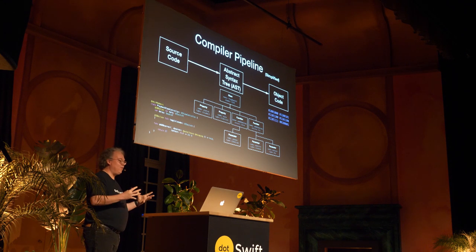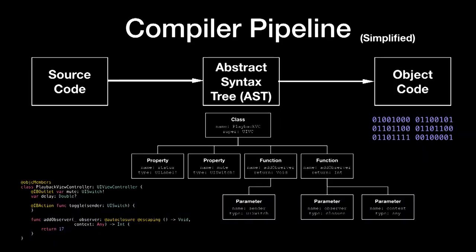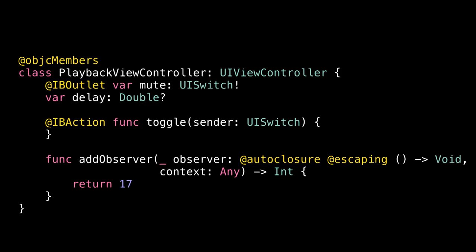All that other stuff doesn't have to worry about text — text is messy — but abstract syntax trees are great, because, I mean, it has three really cool words: abstract, syntax, and tree. Here's some simple code: a UIViewController tagged with @objcMembers, a UISwitch outlet, a property with no annotations, an IBAction, and an observer which takes a closure that's both an autoclosure and escaping.